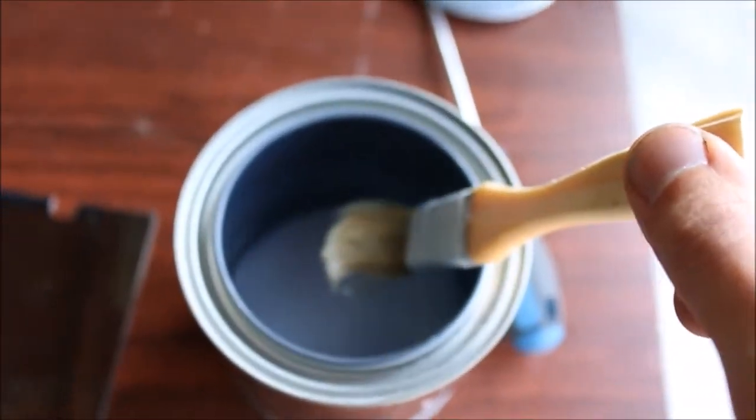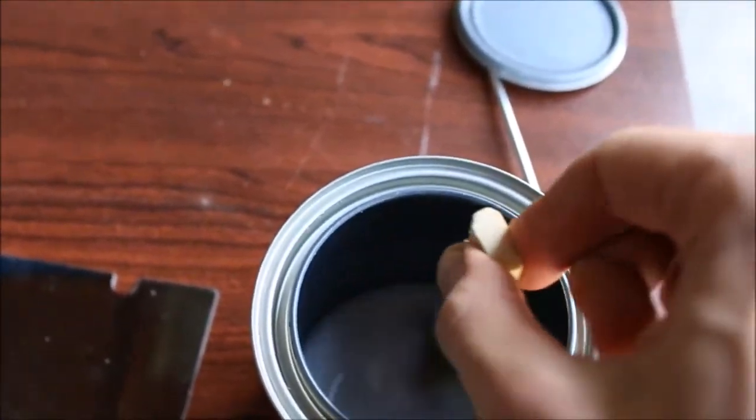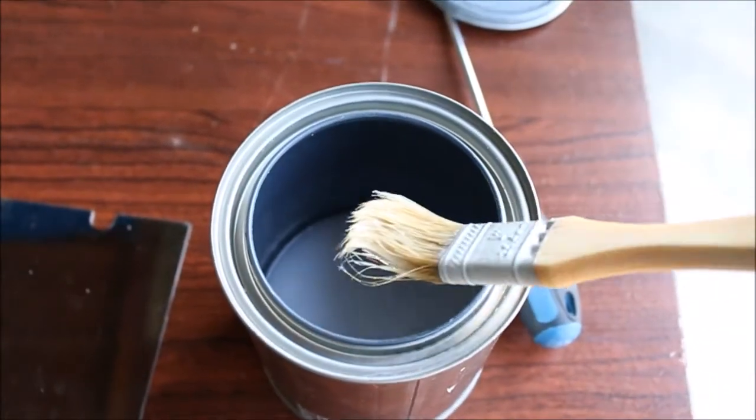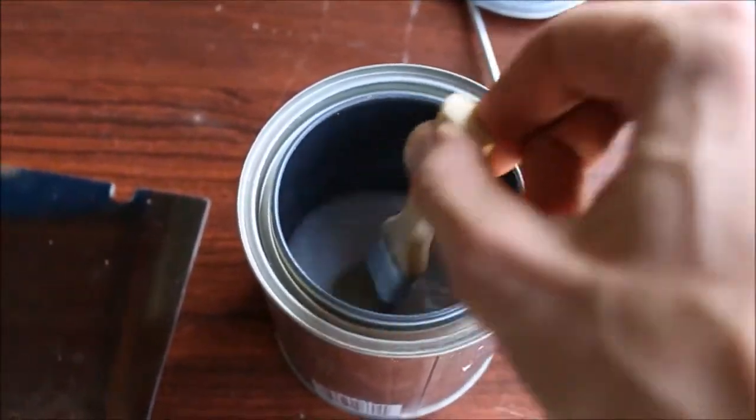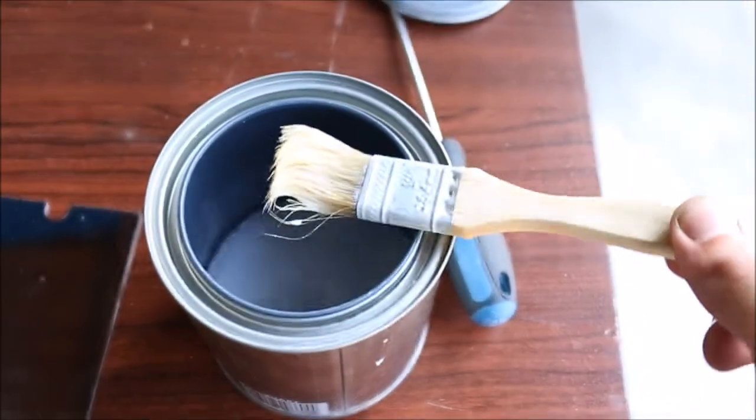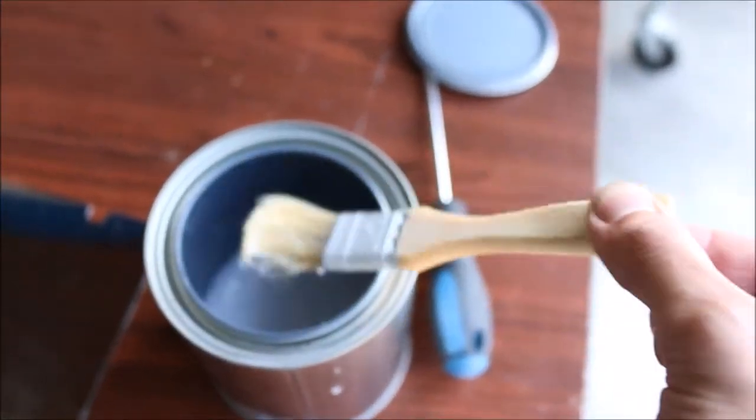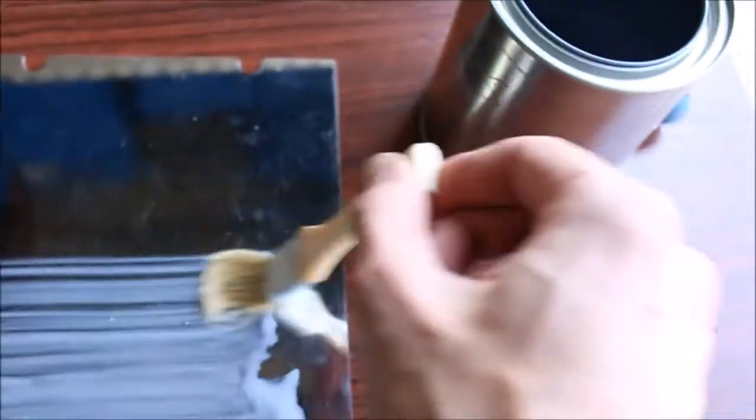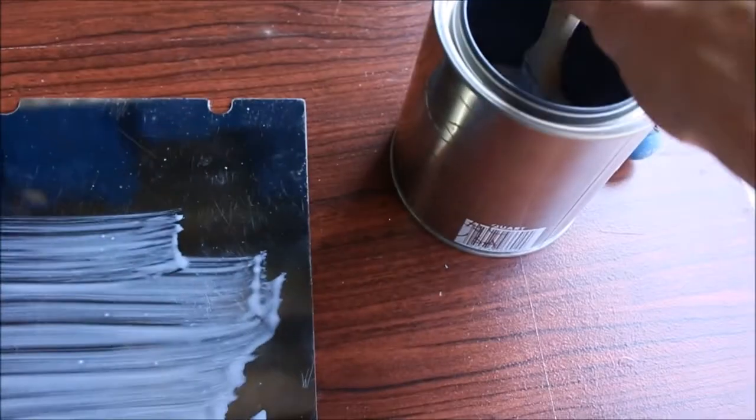And all you need to do is get a natural fiber brush or some kind of brush that won't dissolve in acetone. Keep it in the can there so it stays pliable and soft, and get some on your brush. Come over to your plate and just brush on a thin, thin layer.